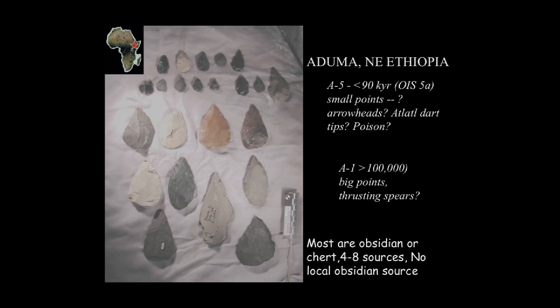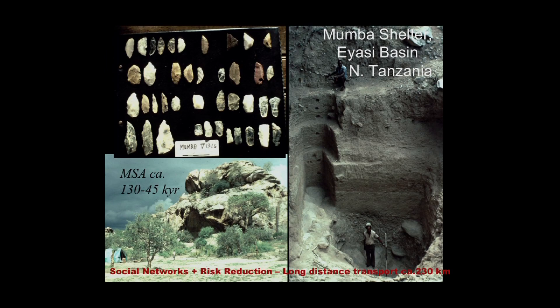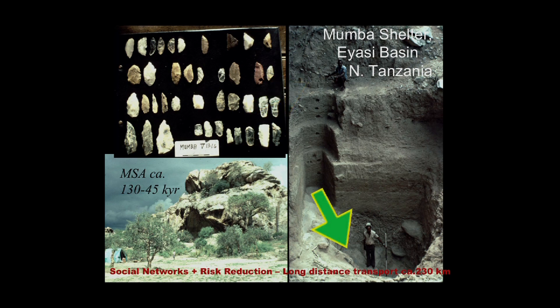We've now agreed among the people who study these things that the small points are in fact elements of a complex projectile weapon system. If you think about it — if you're going to invent something like a bow and arrow, we have to accept that you're a modern human. These are some other kinds of points from Mumba in Tanzania, where the Middle Stone Age goes from the bottom of the site to the top: the bottom is about 100,000 to 120,000 years ago, and this is about 40,000 right here.